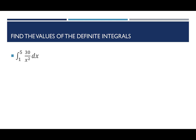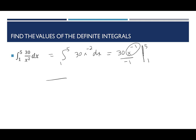The next one: the integral from 1 to 5 of 30/x² dx. I rewrite as 30x⁻² dx. Integrating gives 30x⁻¹ divided by negative 1, with bounds 5 and 1. Rewriting with the x in the denominator: negative 30/x. Be careful with double negatives. Plugging in: negative 30/5 minus negative 30/1 gives negative 6 plus positive 30. The answer is 24.